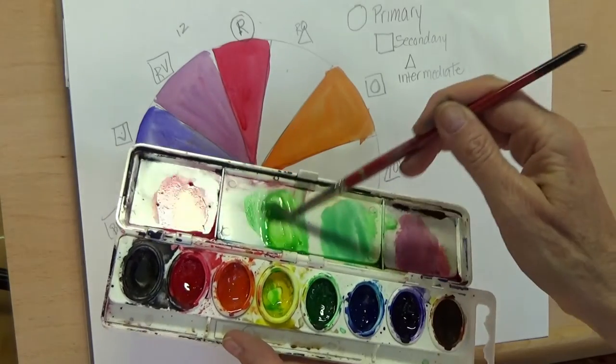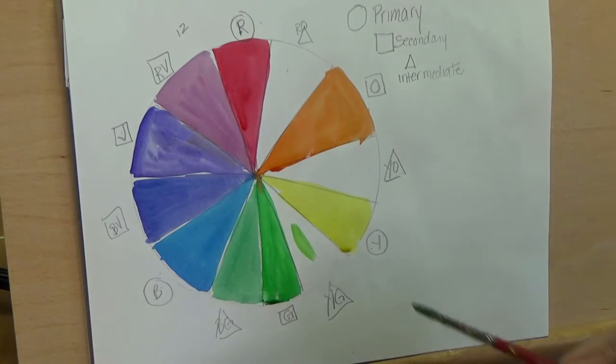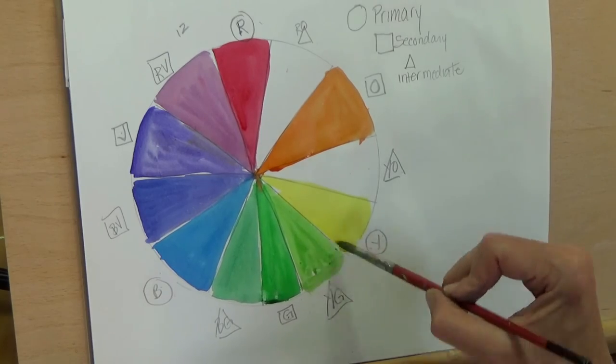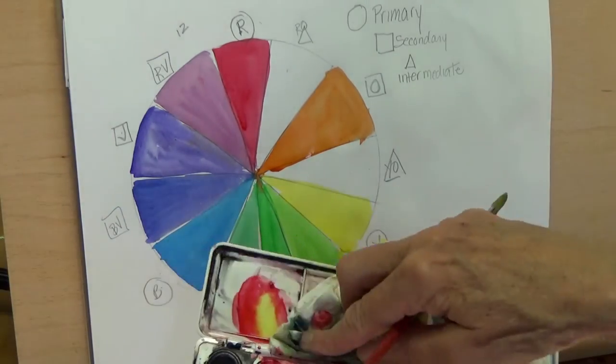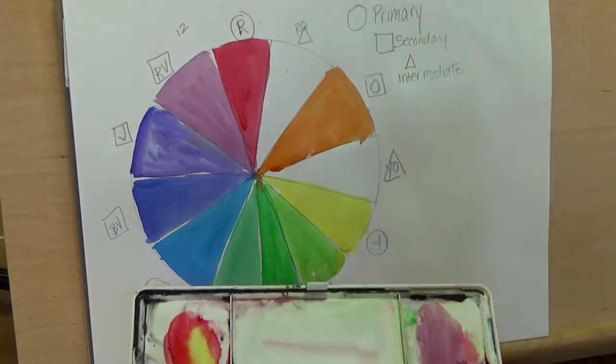A little bit of yellow. You see how I test it out first before I commit, so you can do that. Clean your palette when you need to. Now yellow-orange, a little bit of yellow, a little bit of orange.